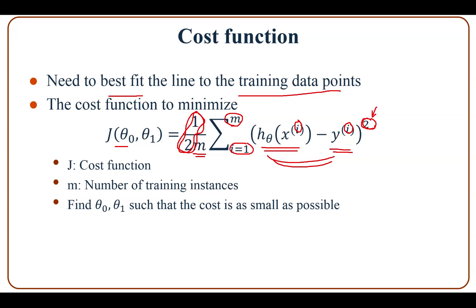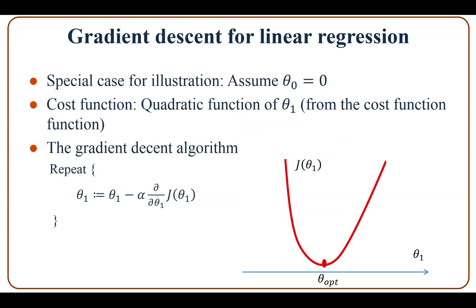The cost function is a function of two variables, theta_0 and theta_1, and you need to find theta_0 and theta_1 such that the cost is as small as possible. Now let's first look at a special case for illustrative purposes. Let's assume theta_0 equals zero, so the cost function becomes a function of theta_1 only. The cost function looks like a curve, and we need to adjust theta_1 such that it moves towards an optimal point.